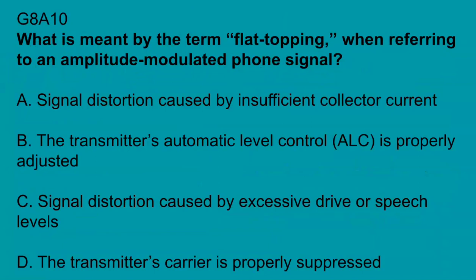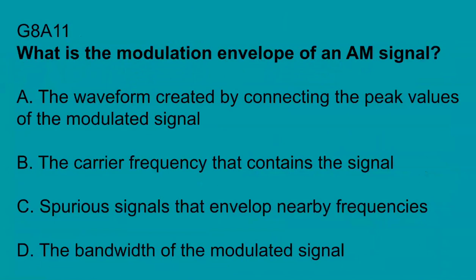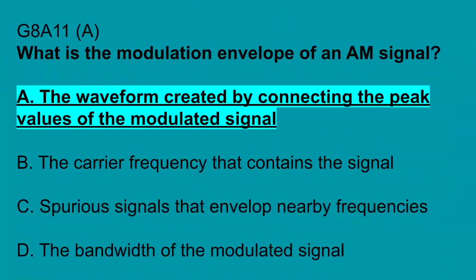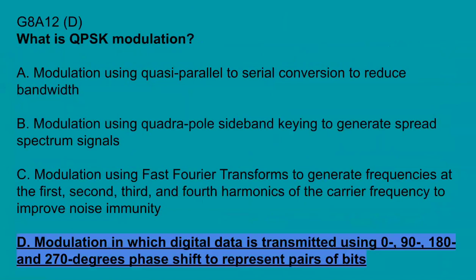G8A10: What is meant by the term flat-topping when referring to an amplitude modulated phone signal? Signal distortion caused by excessive drive or speech levels. G8A11: What is the modulation envelope of an AM signal? The waveform created by connecting the peak values of the modulated signal. G8A12: What is QPSK? Modulation in which digital data is transmitted using 0, 90, 180 negative, and 270 degree phase shifts to represent pairs of bits.